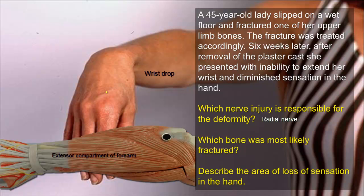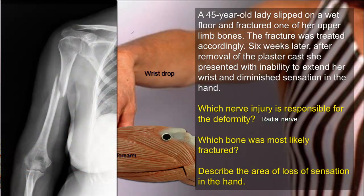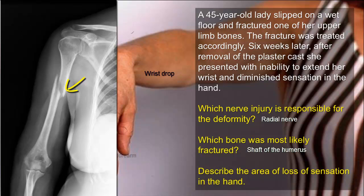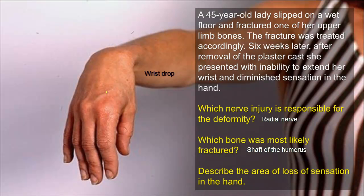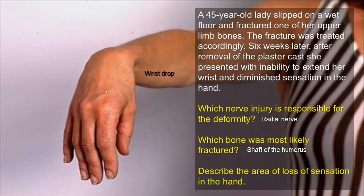According to the scenario, the radial nerve was most likely injured by a fracture of the shaft of the humerus. At this location, the radial nerve is in close proximity to the bone as it spirals around the bone in the spiral groove or radial groove of the humerus. Thus, the nerve injury may be due to the fracture itself, or it may occur subsequently, being compressed during the formation of the callus.